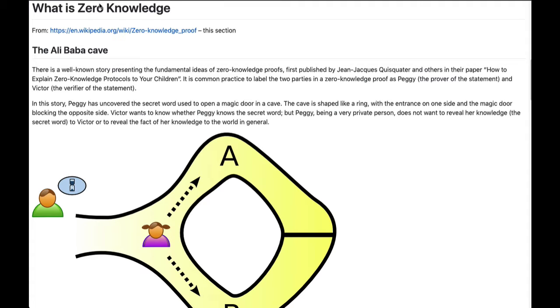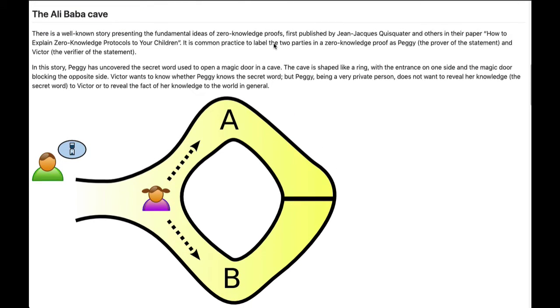So what is the zero-knowledge part of a zero-knowledge proof? I've taken this from the Wikipedia article, but I will walk through it with you.